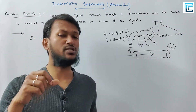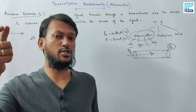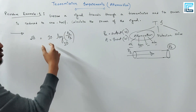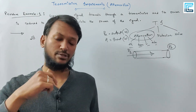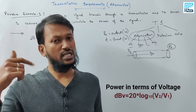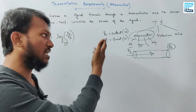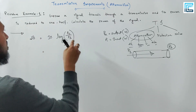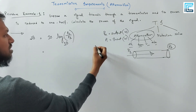For voltage, the power is proportional to voltage squared. So when using voltage, the formula becomes: dB = 20 log₁₀ (V2 / V1), since the factor changes from 10 to 20.